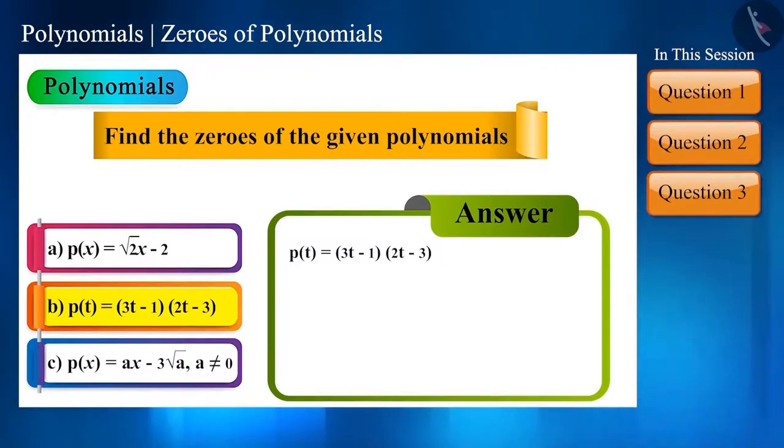Now let us take the next polynomial p of t is equal to 3t minus 1 into 2t minus 3. Friends, here 3t minus 1 into 2t minus 3 is equal to 0 means that when 3t minus 1 is multiplied with 2t minus 3, it results into 0. And this is possible only when one of the two terms is 0.